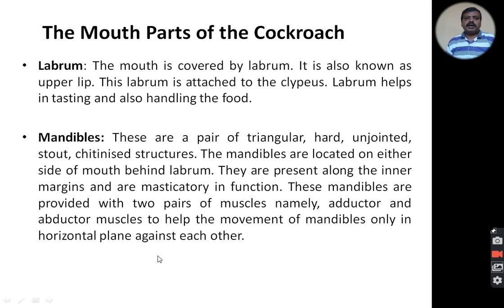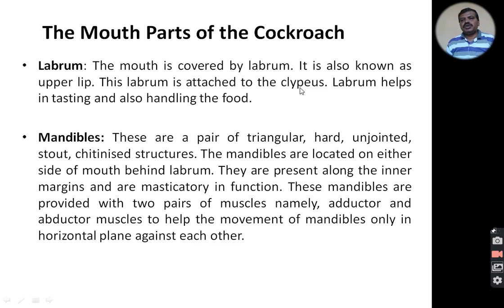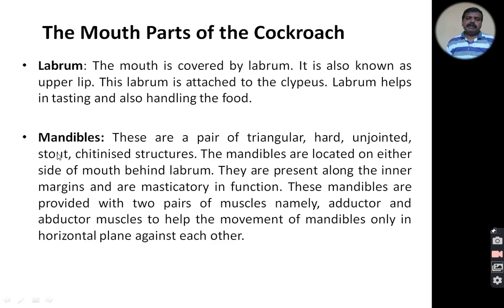The first part is the labrum, also known as the upper lip. The mouth is covered by the labrum. This labrum is attached to the clypeus, which is a sclerite usually present at the front part of the head. The labrum helps in tasting and also handling the food material.